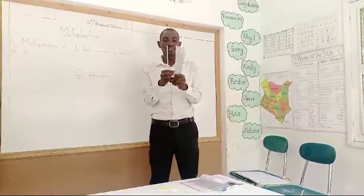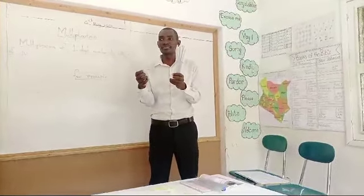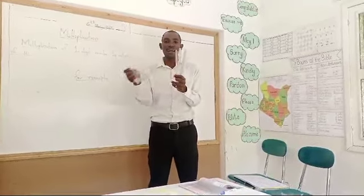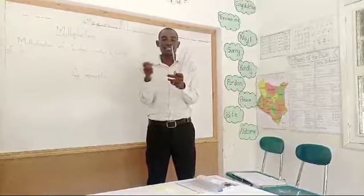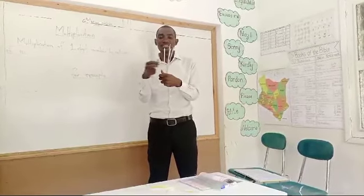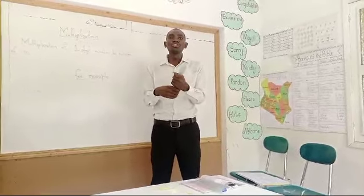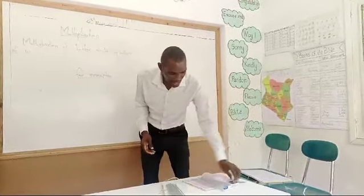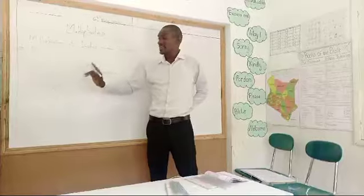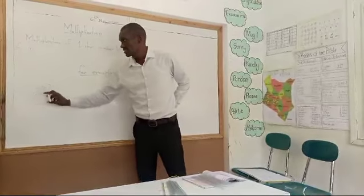We put them together and now we count how many sticks we have altogether. Let's count: one, two, three, four, five, six, seven, eight, nine, ten, eleven, twelve, thirteen, fourteen, fifteen, sixteen, seventeen, eighteen, nineteen, twenty. We have a total of twenty sticks. That will be our answer — two times ten gives us twenty.